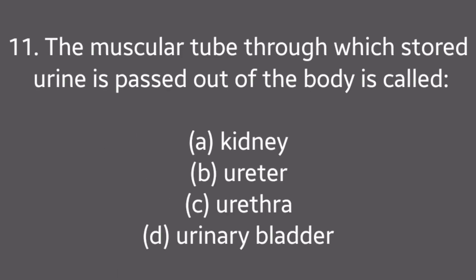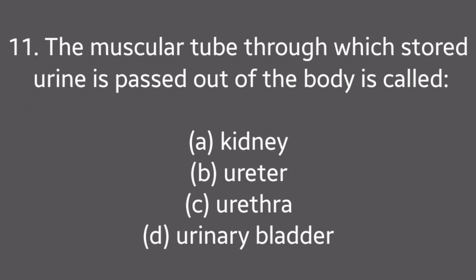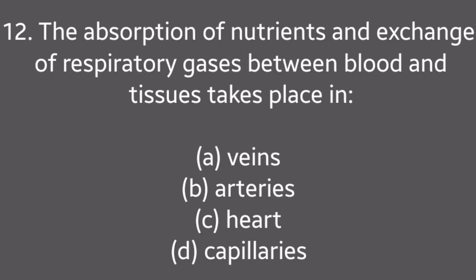Question No. 11: The muscular tube through which stored urine is passed out of the body is called — Kidney, Ureter, Urethra, Urinary bladder. Answer is Option C: Urethra.